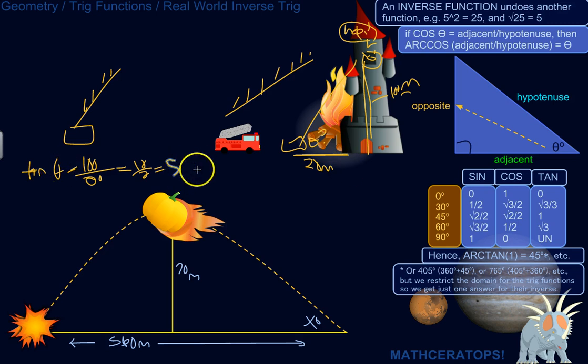The tangent of theta is 5, and you need to know what this angle is. So you could take the arc tangent of 5.